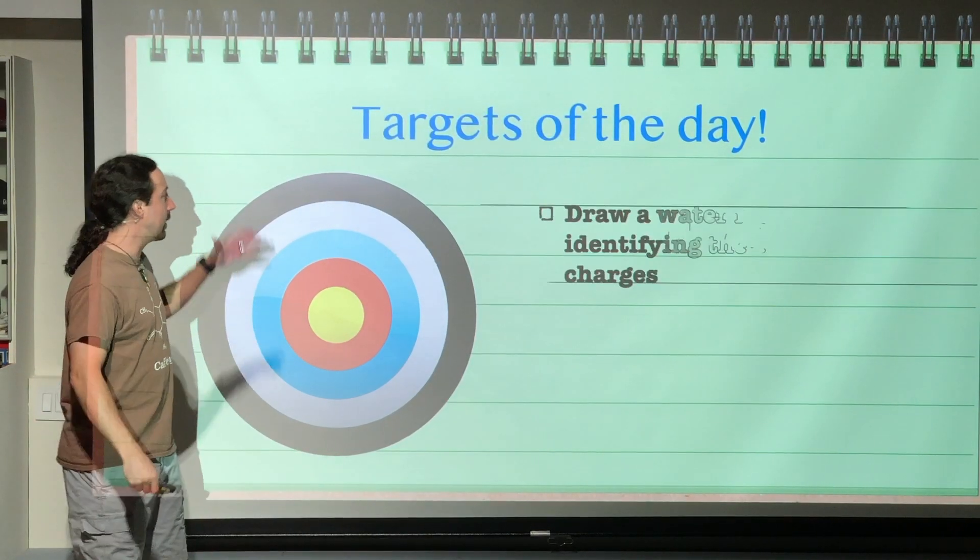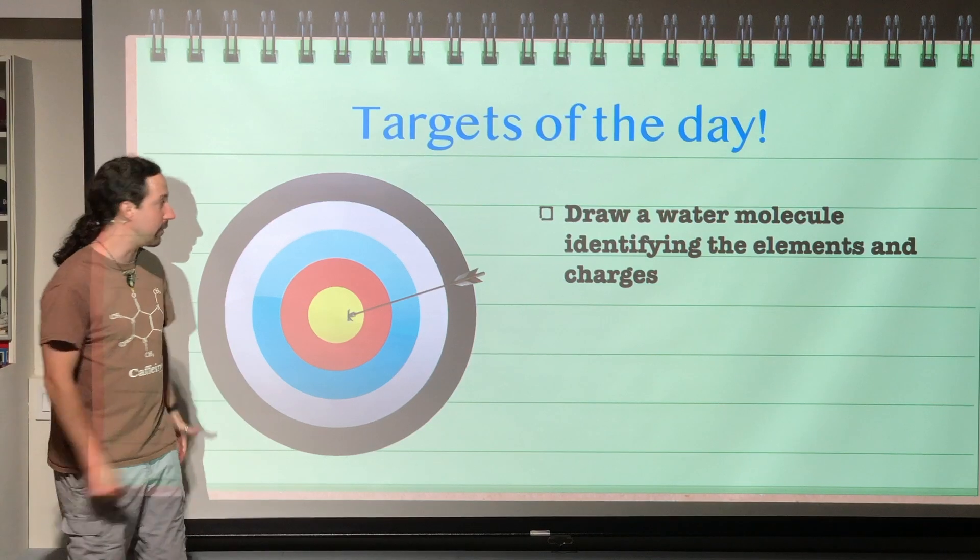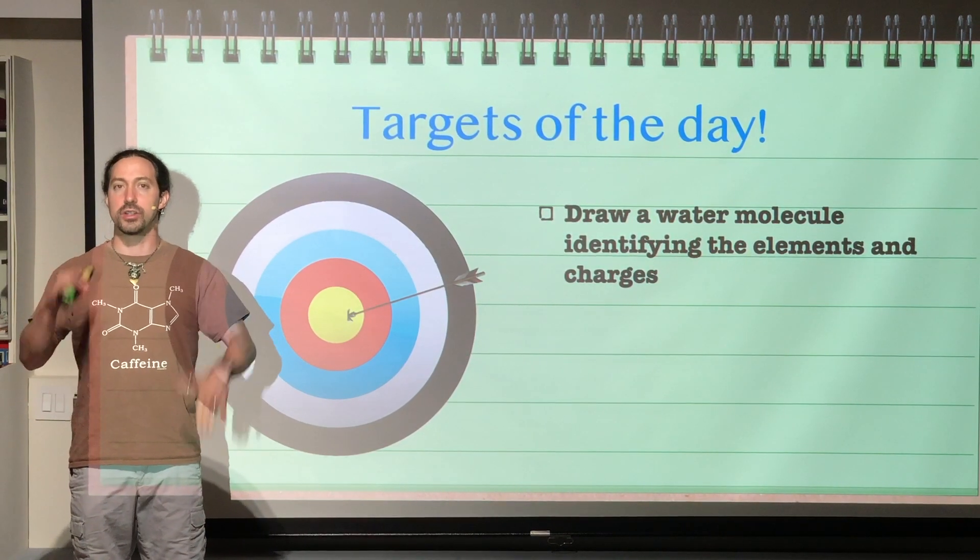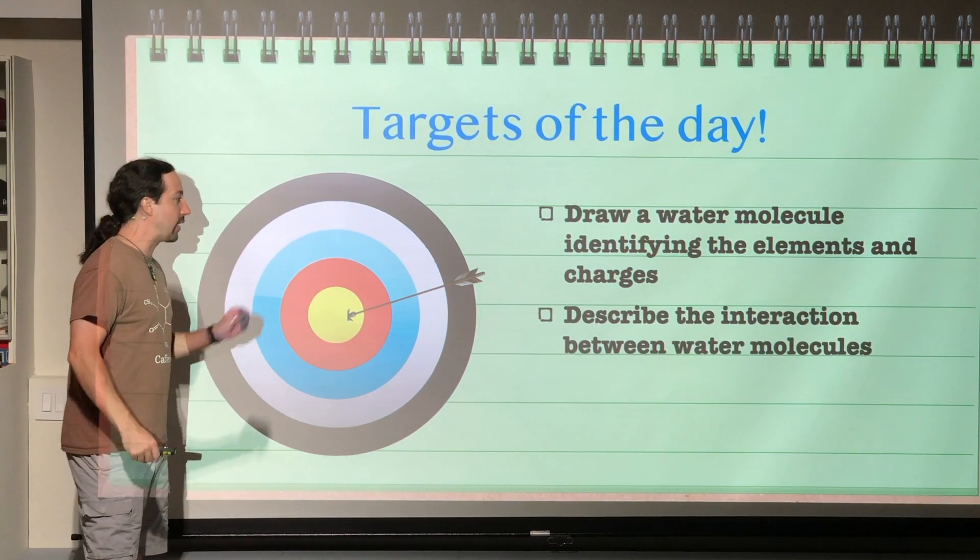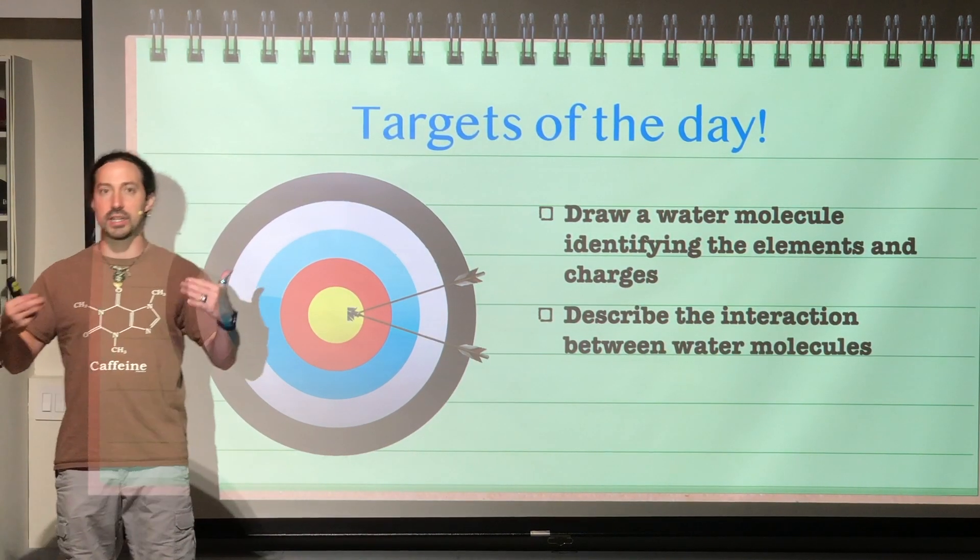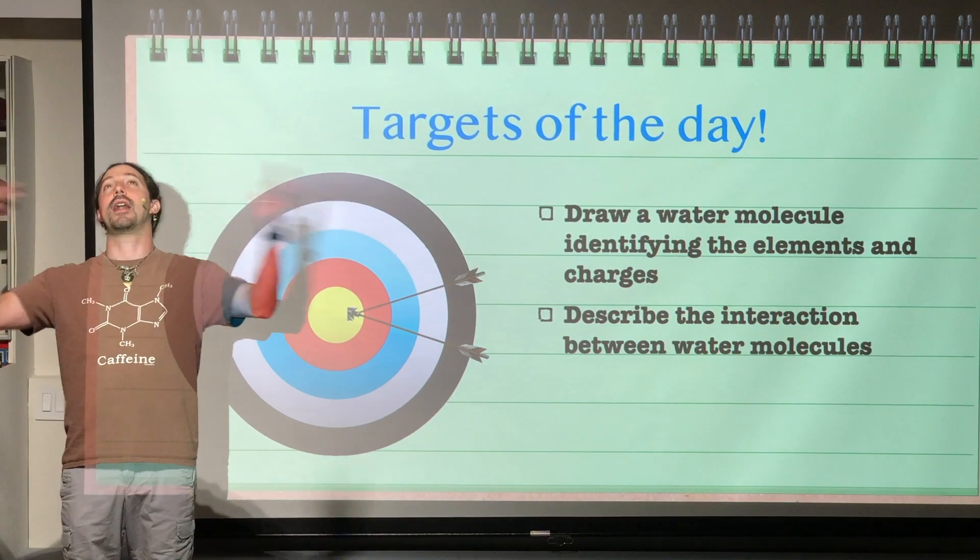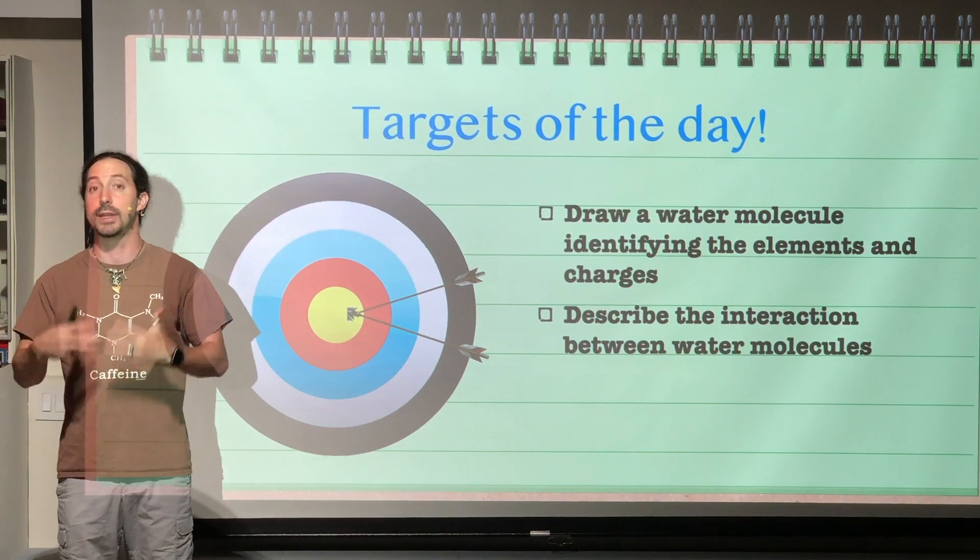First off, our targets for today. Hopefully by the end of today, you can draw a water molecule. That's really going to be important for you to identify the different components about what it's made of. Also identifying something about what we're going to call charge. Next, describing the interaction between water molecules, because they don't typically come just one at a time. Most of the time, you're going to have a lot of water molecules all together, so it's important to know how they interact with each other.